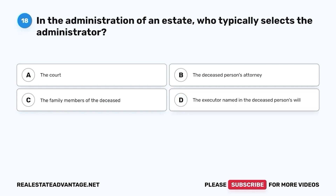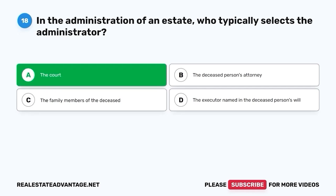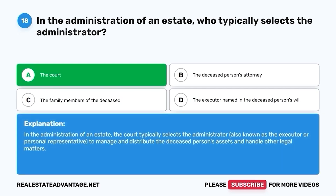Question 18. In the administration of an estate, who typically selects the administrator? A. The court. B. The deceased person's attorney. C. The family members of the deceased. D. The executor named in the deceased person's will. The correct answer is A. The court. In the administration of an estate, the court typically selects the administrator, also known as the executor or personal representative, to manage and distribute the deceased person's assets and handle other legal matters.